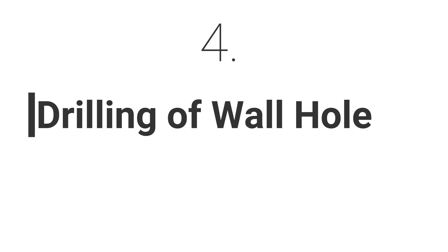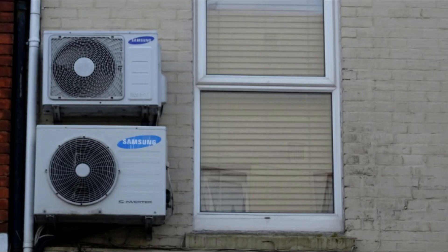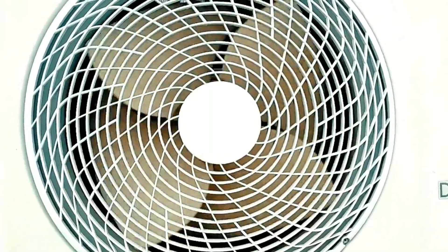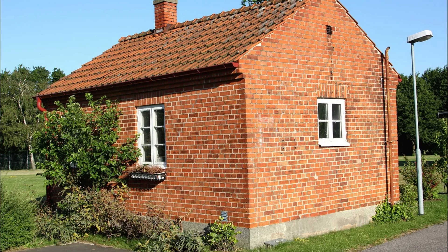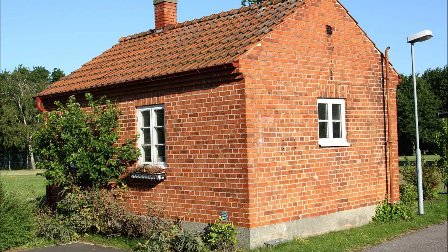Tip number four is regarding the wall hole. To connect indoor and outdoor units in a split AC, we need to drill a 4-inch diameter hole in the masonry wall. If your structure is a framed structure made of RCC beam and column, ensure the hole does not come on the beam, as drilling into structural members might cut reinforcement bars and weaken the structure. If it is a load-bearing structure where weight is transferred through bricks, ensure the hole is not on the wall with maximum openings — drilling on a wall with numerous doors and windows could be dangerous.